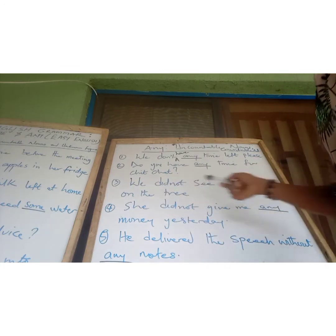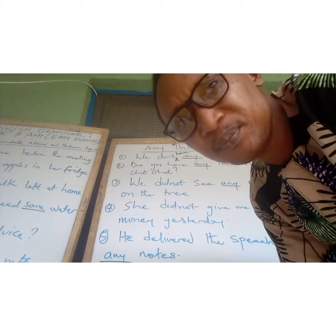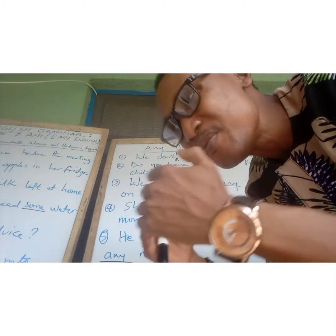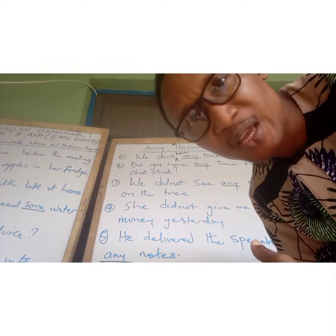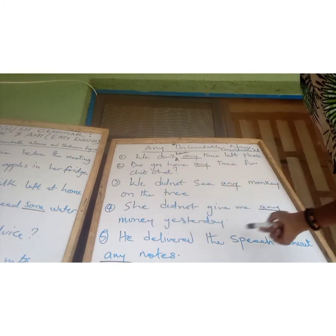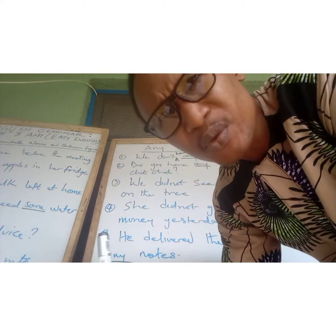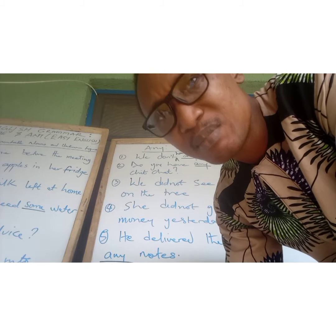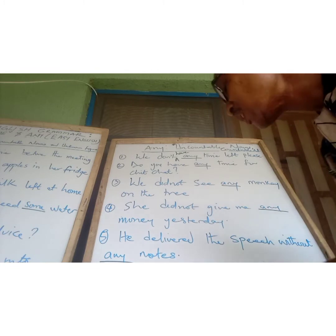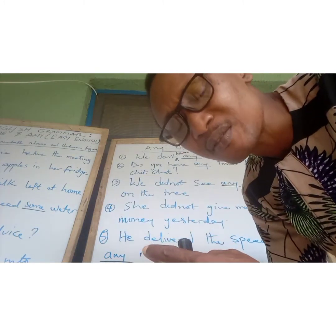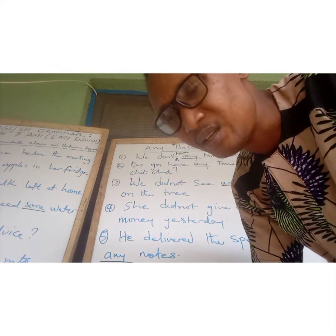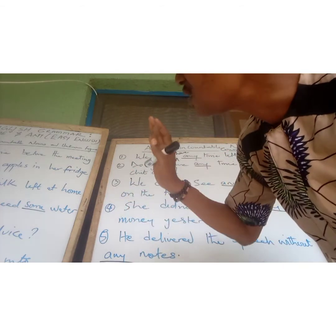More examples of 'any': 'We didn't see any monkey on the tree' — people had been saying there are monkeys on that tree, but we went there and could not see any monkey. 'She didn't give me any money yesterday' — when I was going to school, my mother didn't give me any money. And finally: 'He delivered the speech without any notes' — the president delivered his keynote speech without any notes.